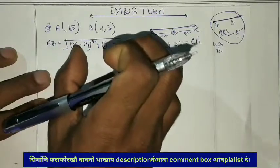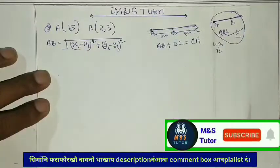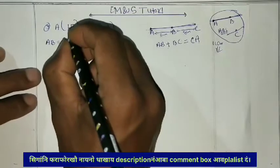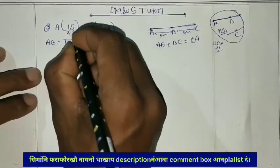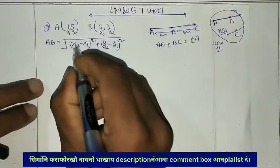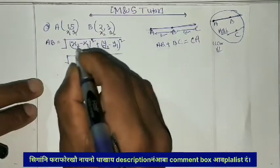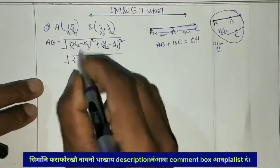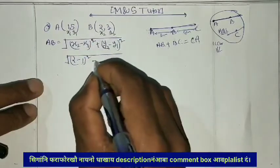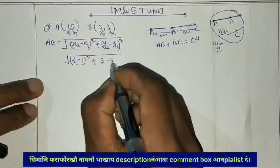So we draw the points. AB: x1 is 1, y1 is 5, x2 is 2, y2 is 3. AB is equal to: x2 minus x1, that is 2 minus 1, whole square, plus y2 minus y1, that is 3 minus 5, whole square.